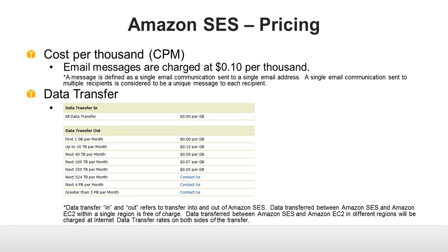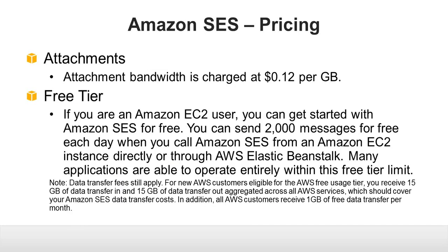Amazon SES pricing is a flat rate of 10 cents per thousand email messages. We do charge for data transfer out, but your first gigabyte each month is free. If you choose to send email with attachments, those are billed separately at 12 cents per gigabyte. Like many other AWS services, we do have a free tier. If you are an Amazon EC2 user, you can send 2,000 messages each day for free when you call SES from your EC2 instance directly or through AWS Elastic Beanstalk.